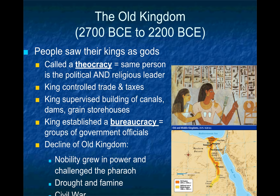The growing power of the nobility actually contributed to the decline of the Old Kingdom, because eventually the nobles grew so powerful that they challenged the authority of the pharaoh, resulting in civil unrest and eventually civil war. Another reason the Old Kingdom declined was environmental problems — a major drought and famine, which also weakened the pharaoh's power because he could no longer provide for all his citizens. When the Old Kingdom collapsed, Egypt returned to those two divided kingdoms — Upper and Lower Egypt — once again.